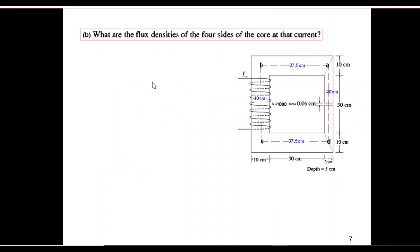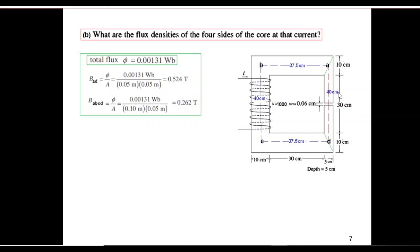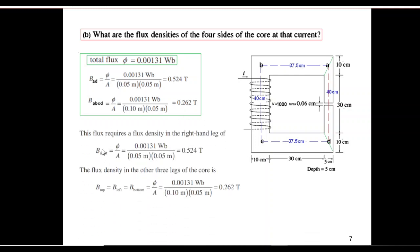Now we come to the answer of the second part. What are the flux densities of the four sides of the core at that current? So we had already calculated flux densities. We had calculated flux densities for AD, this part, 0.524 tesla. And we had calculated flux densities for all this area. Since the dimensions are the same, therefore B_AB or B_CD and B_BC will be the same, 0.262 tesla. So we can write B_right or B_AD is 0.524 tesla, and B_top, B_left, B_bottom is 0.262 tesla.